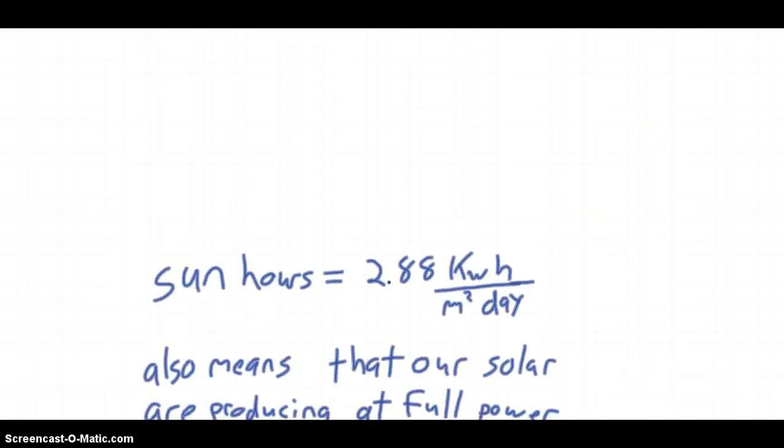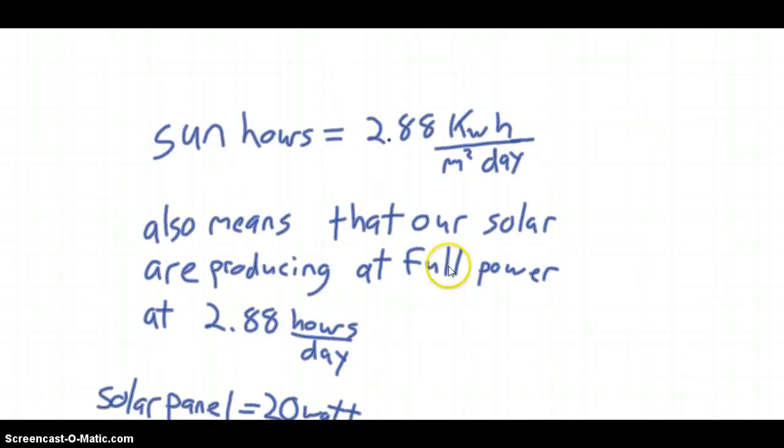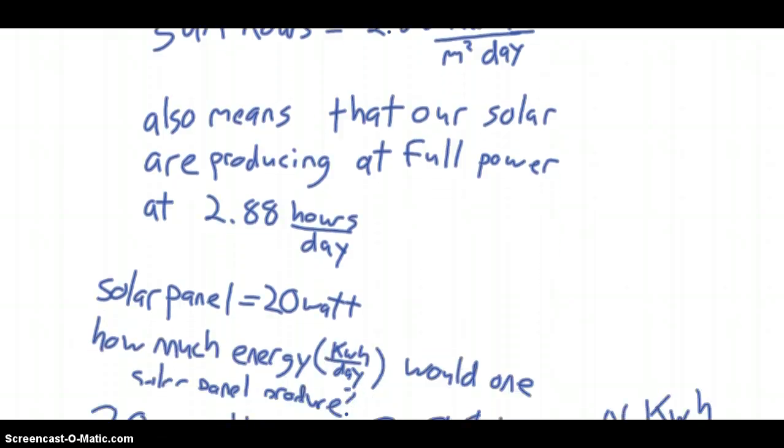And if we go down to the next, sun hours also mean, that we have our 2.88 from above, but it also means that basically our solar panels are producing at full power for about 2.88 hours per day. So it's just an equivalent measure. It doesn't mean they're actually only producing for 2.88 hours, and they're producing at max power. If it's a little cloudy for six hours, and they're producing at half, then they might be producing equivalent of 2.88 full hours that day.